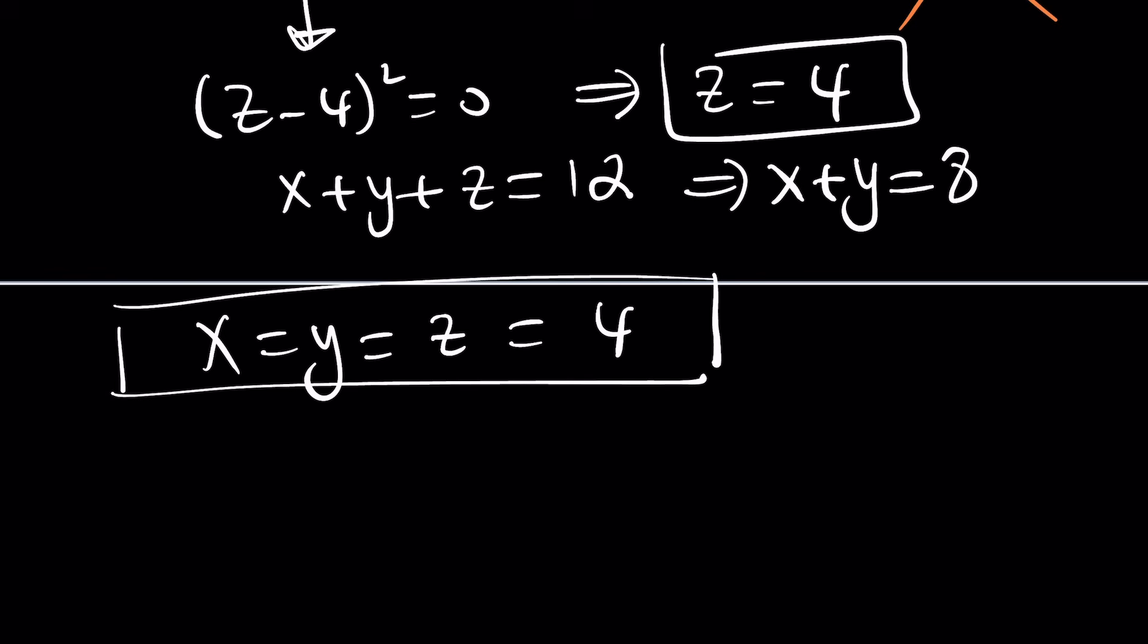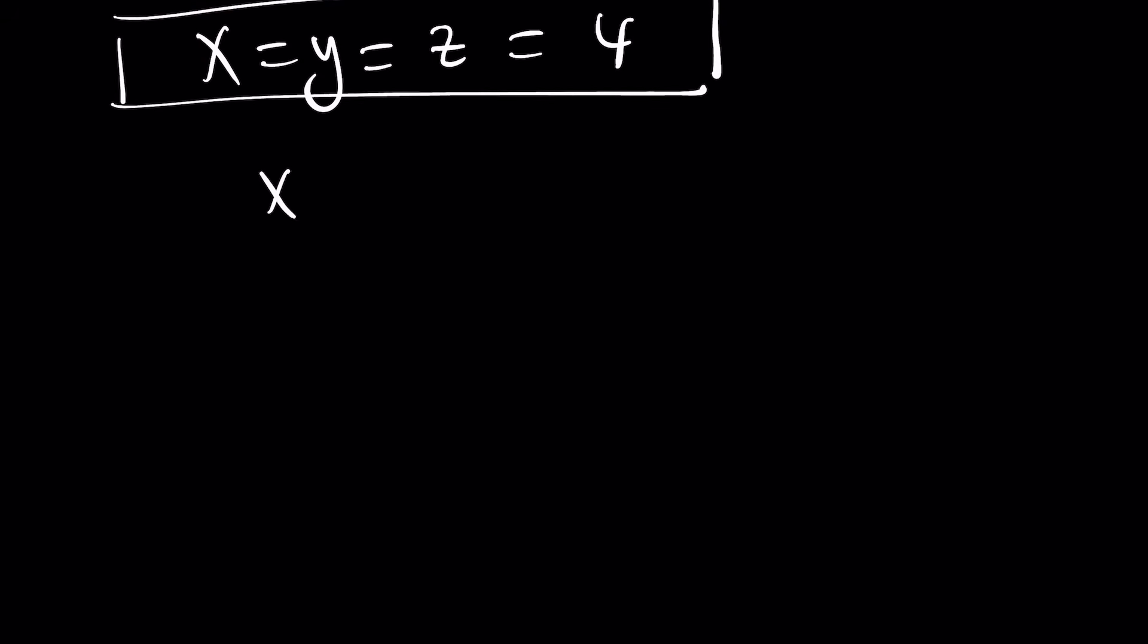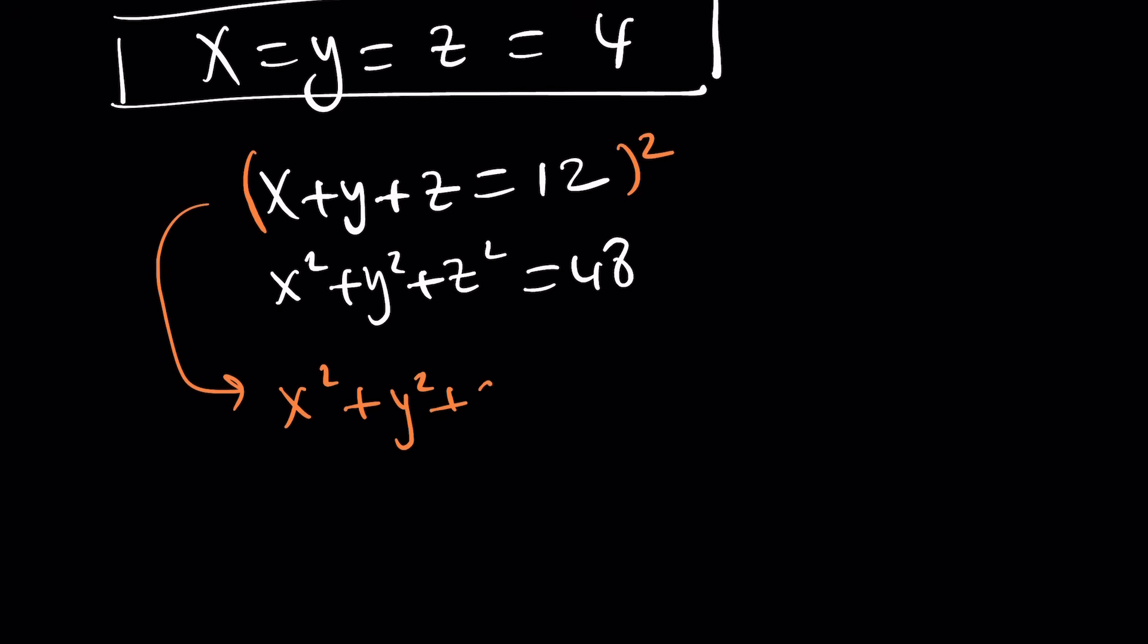So we were given this. So we could possibly square both sides, couldn't we? You probably thought of that. So let's go ahead and square both sides here, because that'll give us x squared plus y squared plus z squared plus 2xy plus 2xz plus 2yz equals 144. Well, this is 48. Subtracted, you'll get 96. Divide by 2, you'll get xy plus xz plus yz equals 48.